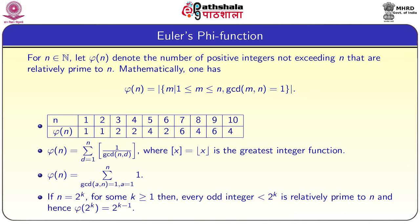Another way to define φ(n) is: φ(n) = Σ from d=1 to n of ⌊1/gcd(n,d)⌋, where the box represents the greatest integer function. Whenever gcd is 1, we get ⌊1/1⌋ = 1. Whenever gcd(n, d) is more than 1, then 1 divided by that number is 0-point-something, so we get 0. This is another way to define φ(n). Equivalently, φ(n) = Σ_{a=1, gcd(a,n)=1}^{n} 1. Both representations are the same.